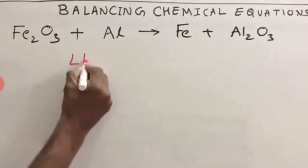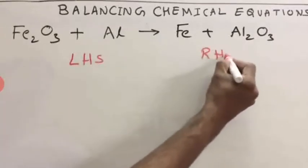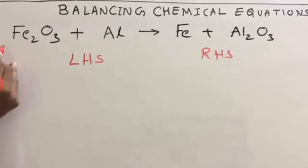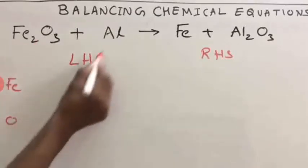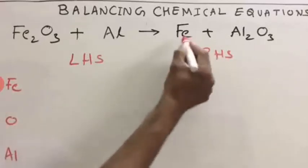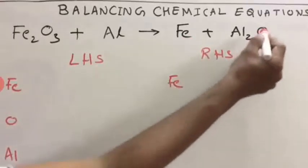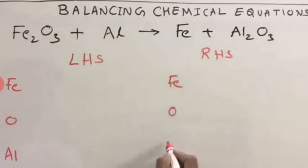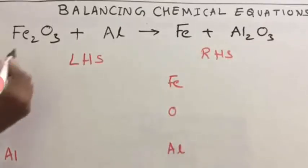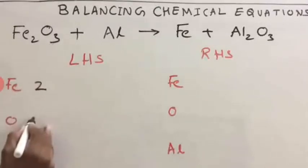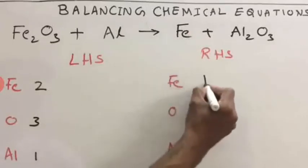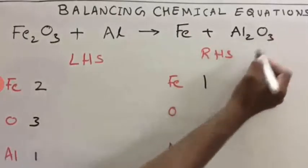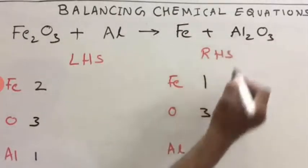Write the equation first and then write LHS and RHS. On LHS you have iron, oxygen, and aluminium. Similarly on RHS you have iron, oxygen, and aluminium. Now check the number of atoms of each. For iron you have 2 on LHS, for oxygen you can see 3, and aluminium 1. On RHS: iron 1, oxygen O3 means 3, aluminium Al2 means 2.